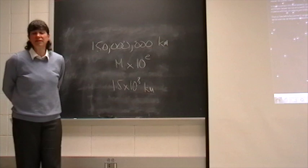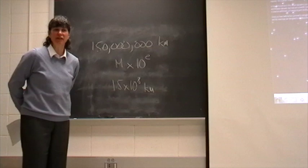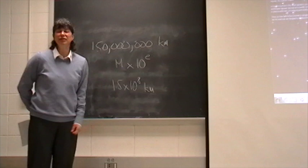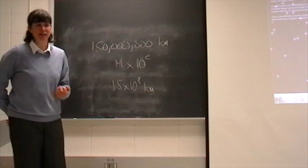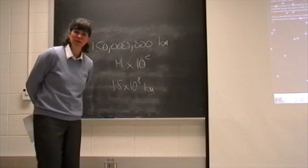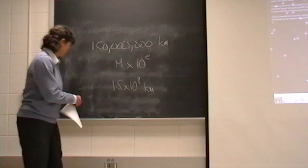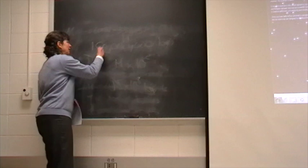Scientific notation can also be very useful if you're taking two very large numbers and multiplying them together. For example, if I had 150 million kilometers and I wanted to multiply that by a very large number, you can imagine what it was like in elementary school where you'd be taking two long numbers, multiplying them out, and you'd have about 30 rows of numbers that you'd have to keep track of. Scientific notation makes things much easier.